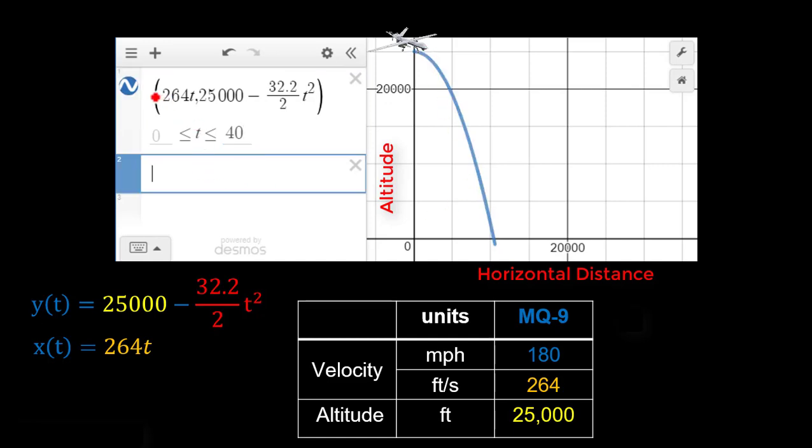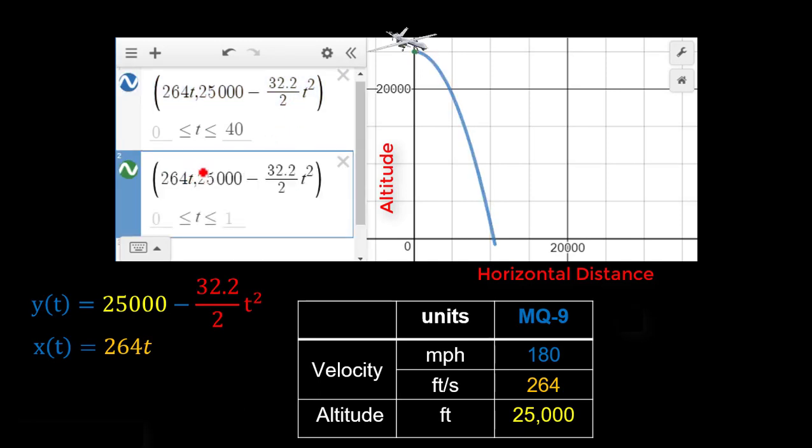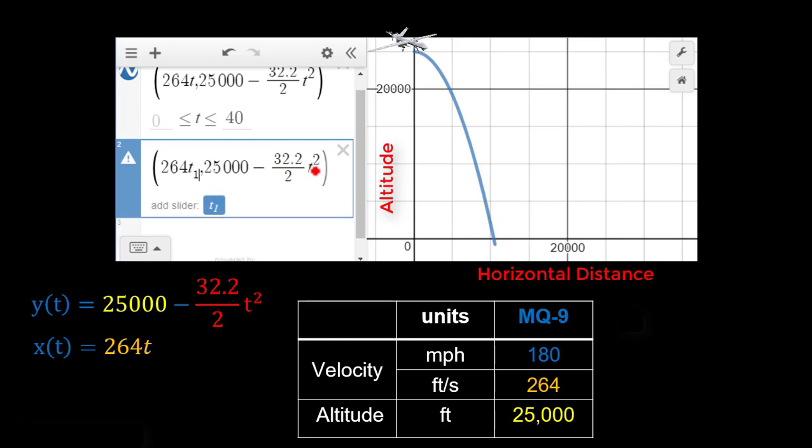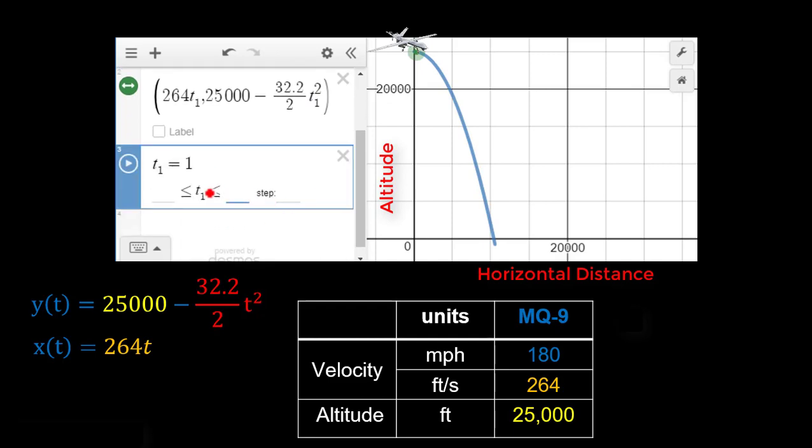Now, the cool thing about making this in a parametric equation is I can just take this whole thing, and I'm going to change this variable to T1 instead of T here. And if I do that and I make a slider here, let's go from 0 to 40 again. And if I do that, you can see if I animate this, you can see what the X and Y position will be for each second as the bomb is dropped. And so, of course, that's what path the bomb would follow. Let's go ahead and watch that again. It starts up here.